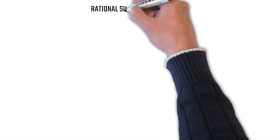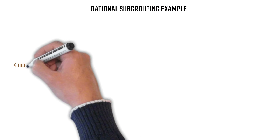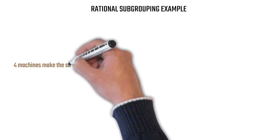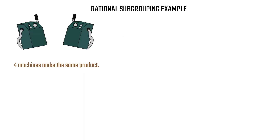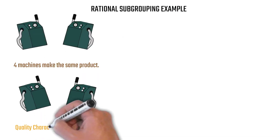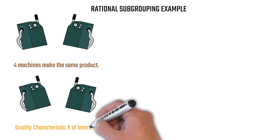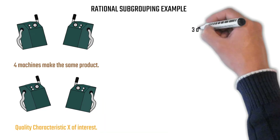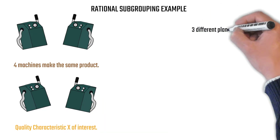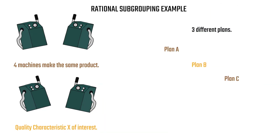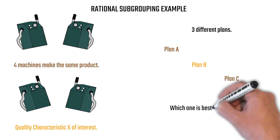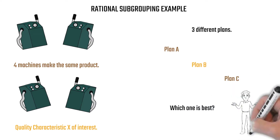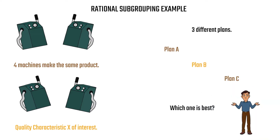Let's take a look at an example: four machines making the same product — machines A, B, C, and D. We have a quality characteristic we're interested in. We're going to have three different subgrouping plans — A, B, and C — and we're going to determine which one is the best.